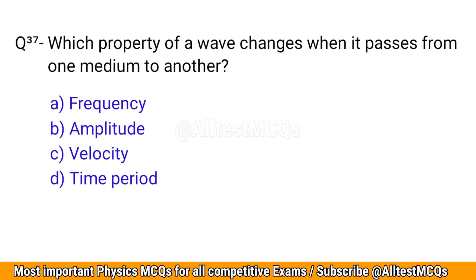Q37. Which property of a wave changes when it passes from one medium to another? The correct option is C: Velocity.